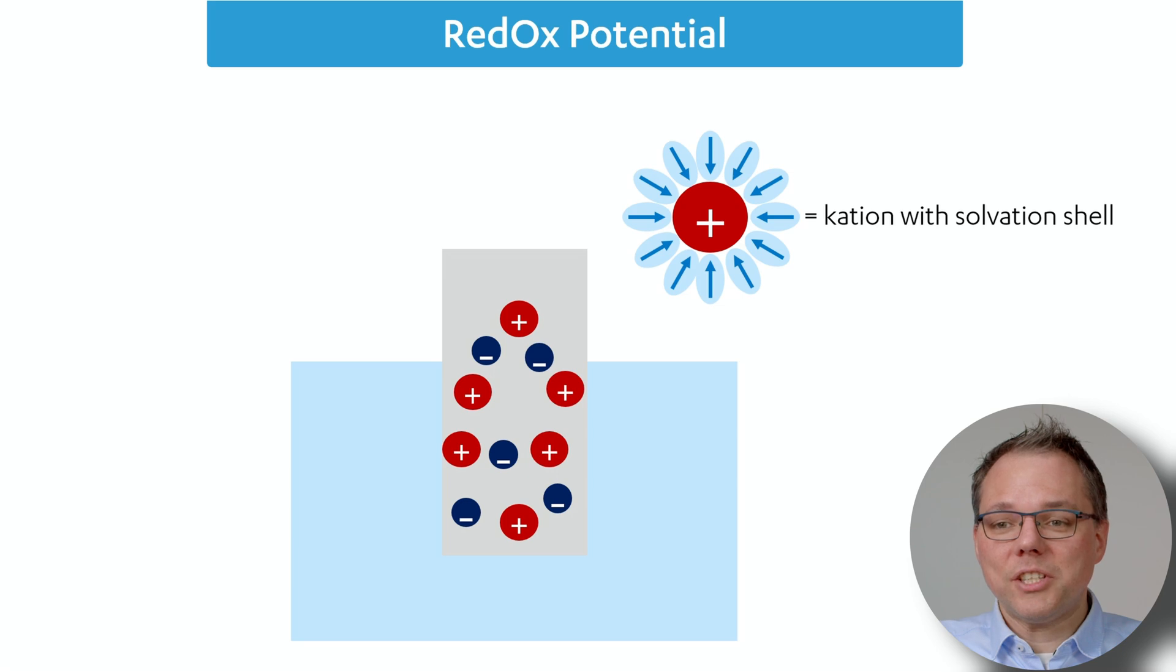Let's immerse a metal sheet here in gray in this blue solution. What happens is the positive part of the atoms, the protons and neutrons, they go as positive particles into the solution. Why do they do that? Well, the water is forming a little cushion, a little shell around it, which is energetically very preferable.